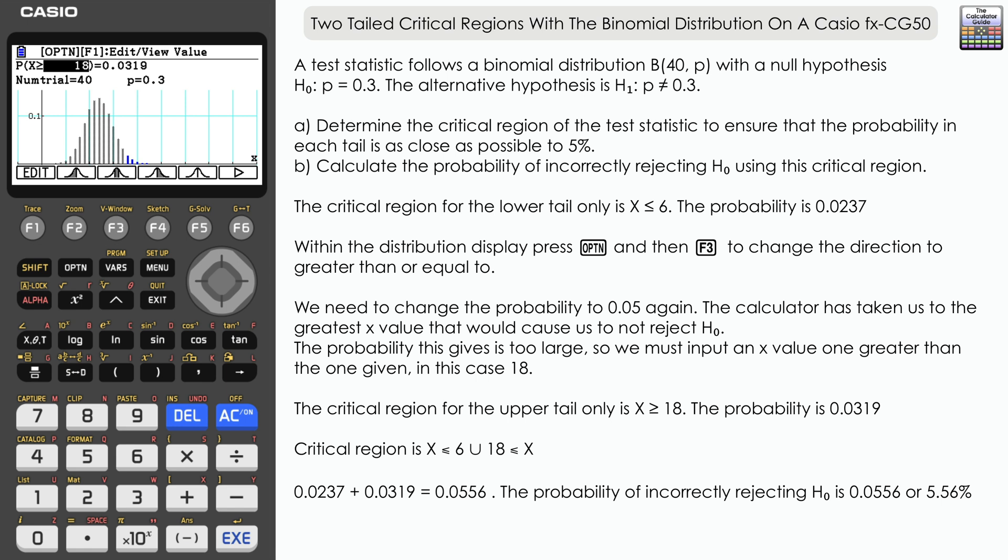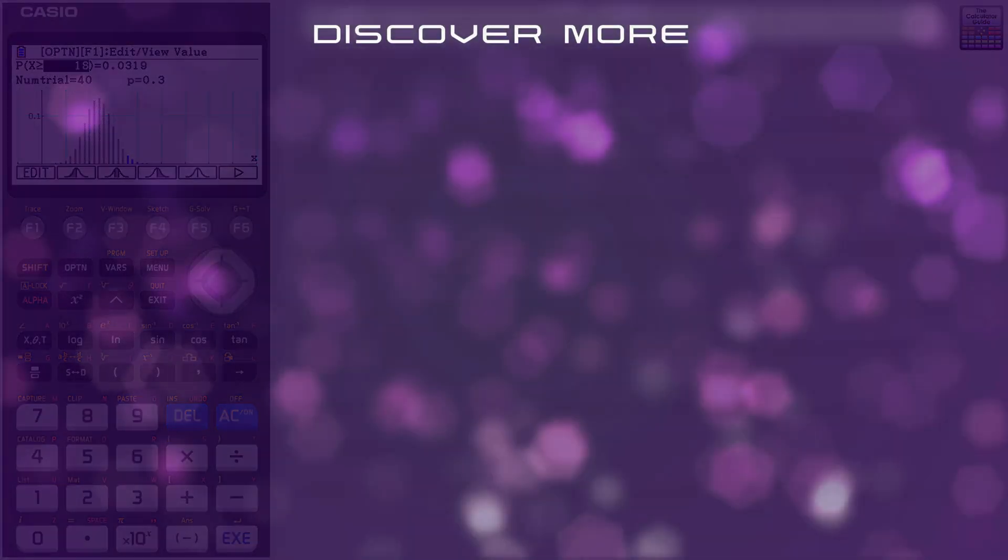So there we go—how to find two-tail critical regions using the binomial distribution on a Casio fx-CG50. Remember, you have to find the two regions separately and then, if required from the question, define those regions together. Don't forget to like and subscribe for future videos. Thank you very much for watching, and I'll see you next time on The Calculator Guide.